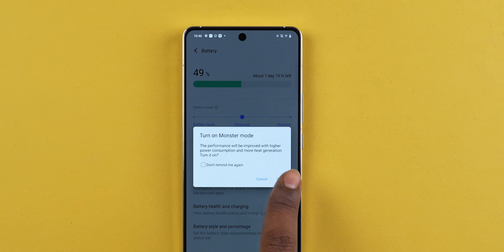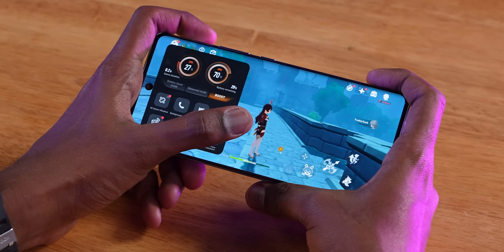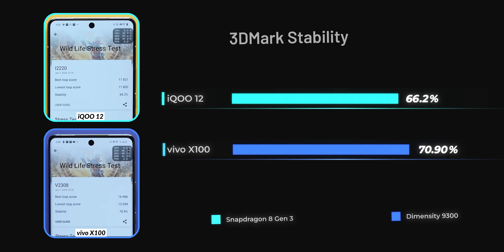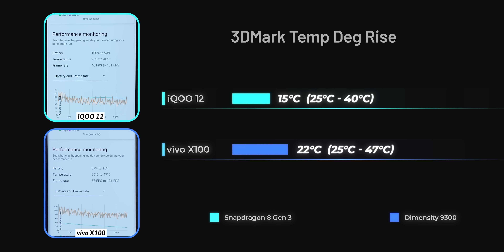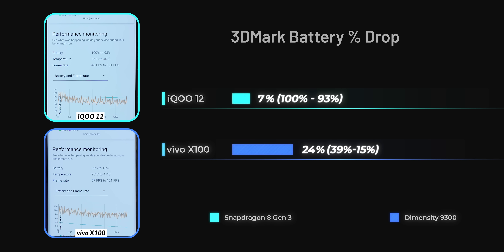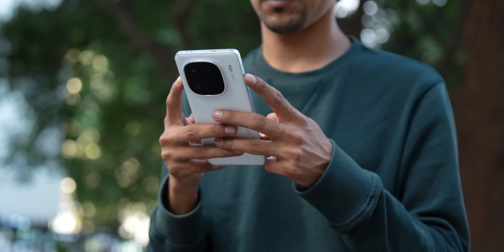Before running the 3DMark Wildlife stress test, we switched on iQ's Monster Mode to push performance to its peak, and on Vivo we enabled the Ultra Game Mode's boost mode. Interestingly, GPU stability was actually better on the X100 — it scored 70.9% stability compared to 66.2% on the iQ12. However, the X100 gets hotter and loses more battery life: it touched a peak of 47 degrees and lost 24% battery, whereas the iQ12 reached only 44 degrees and lost just 7%. I prefer the iQ12's tuning because a small hit in GPU stability is worth it for much better battery life and lower thermals.